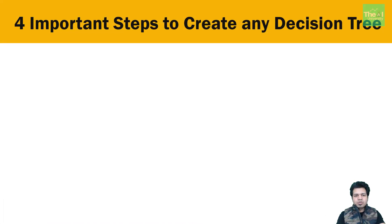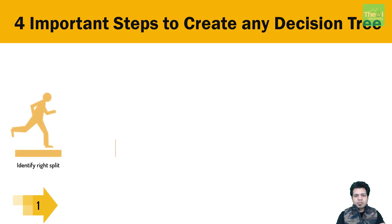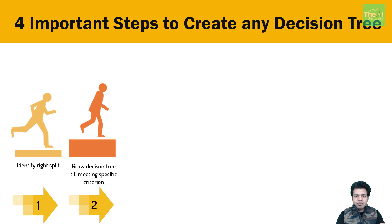Let's jump straight to the topic to see what are those four important steps to create the decision tree. The first step is to identify the right split. Here we look at all possible split options and calculate the most effective option using one of the many methods. The split will result in two or more child nodes from the parent node, and this same process is repeated at each child node.